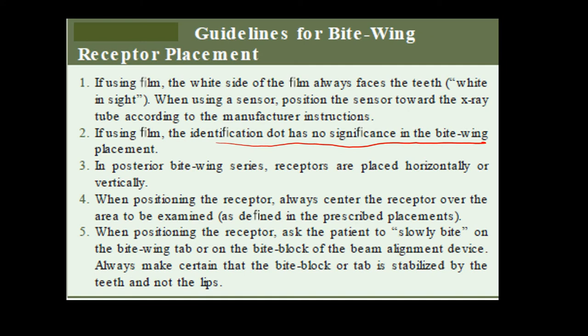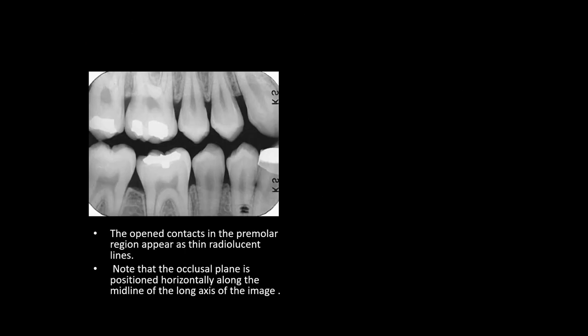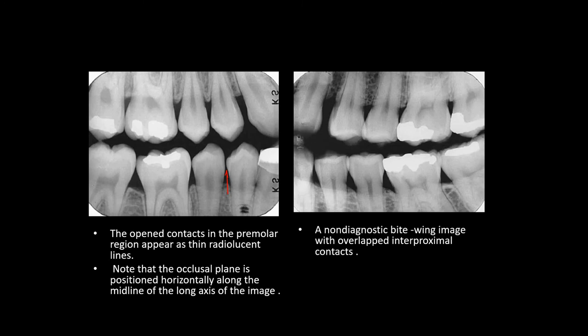In a posterior bitwing series, receptors are placed horizontally or vertically according to requirement. Always center the film over the area to be examined. Ask the patient to slowly bite on the bitwing tab or bite block of the beam alignment device, and always ensure the tab is stabilized by the teeth and not the lips. A good bitwing image shows open contacts in the interproximal region as radially lucent lines, with the occlusal plane positioned horizontally along the midline of the long axis of the image. A non-diagnostic bitwing shows overlapped interproximal contacts.